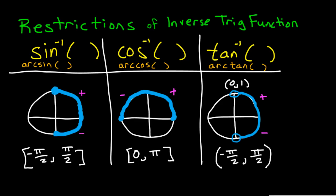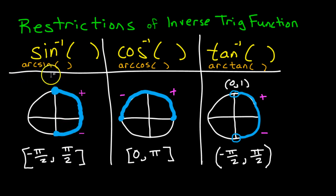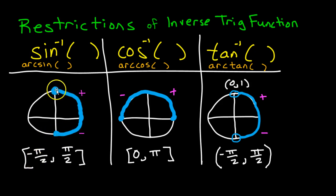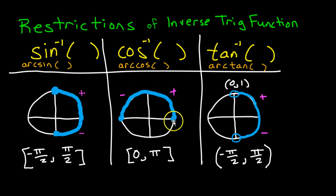Please remember that inverse trig functions have restrictions on the range. Inverse sine or arc sine is only defined for the right side of the unit circle, from negative pi over 2 to positive pi over 2. Inverse cosine is only defined for the top half of the circle, from 0 to pi.